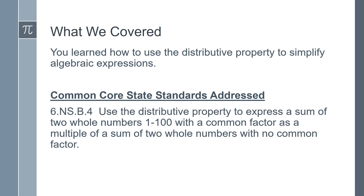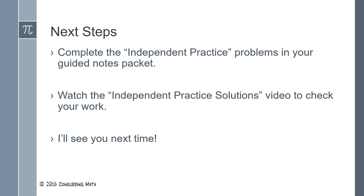Today you learned how to use the distributive property to simplify algebraic expressions. The Common Core State Standard today was to use the distributive property to express a sum of two whole numbers between 1 and 100 with a common factor as a multiple of a sum of two whole numbers with no common factor. Now that you are familiar with these techniques, complete the independent practice problems in your guided notes packet, then watch the independent practice solutions video to check your work. Thanks for watching this episode of Conquering Math, where it all adds up. I'll see you next time.